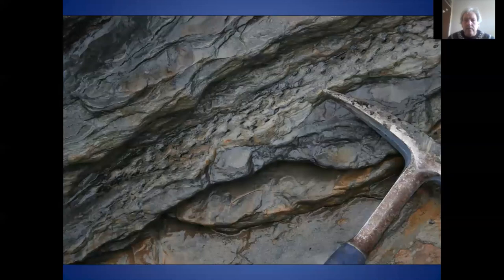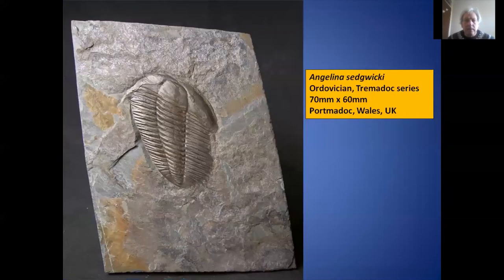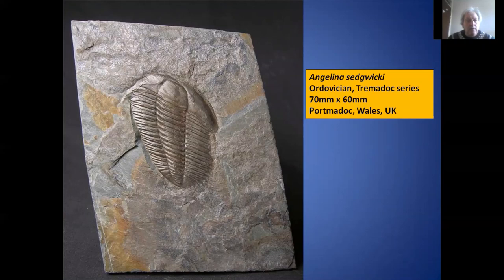But fossils aren't exclusively found in sedimentary rocks. We can also find them in metamorphic rocks. This is a trilobite from Wales, and the picture hasn't been taken at a funny angle. The fossil is actually in slate, which is a low grade metamorphic rock, and the slate's formation distorted the sediments so the trilobite has been distorted in that process.